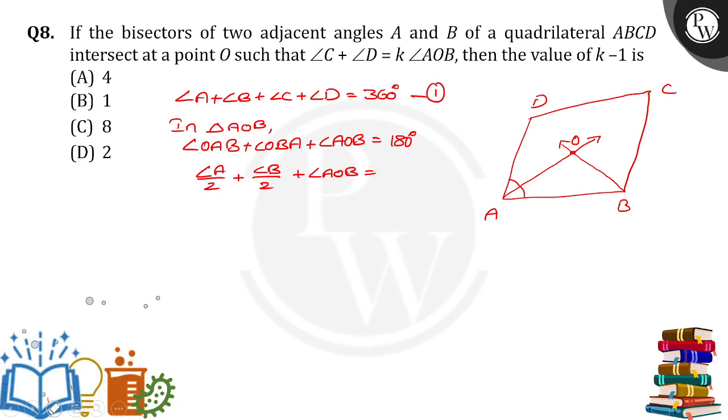Taking 2 as the LCM, we will get angle A plus angle B plus 2 times angle AOB equals 360 degrees as equation number 2.